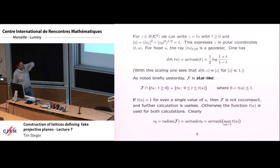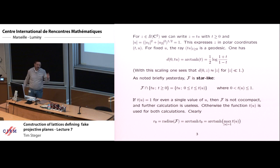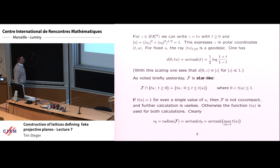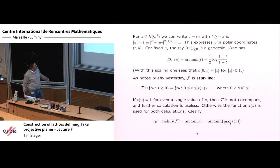In several places it's going to be convenient to use a sort of polar coordinates. If we have a Z in the ball, write it as T times U, where U has norm one. So T is like the radius and U tells you the direction. For fixed U, the ray T·U is actually geodesic. The distance formula is given there — I believe that formula has already been on the board before. It's slightly different from the distance that Julien used; there's a factor of two. The distance is scaled to be comparable to ordinary Euclidean distance near the origin.